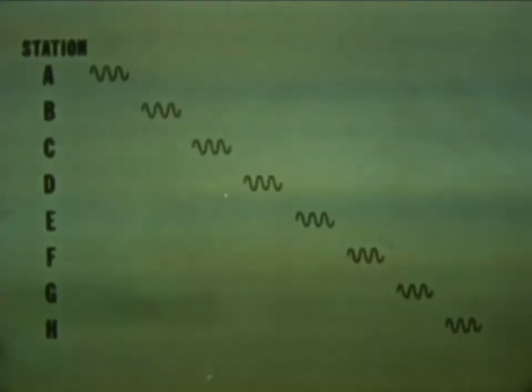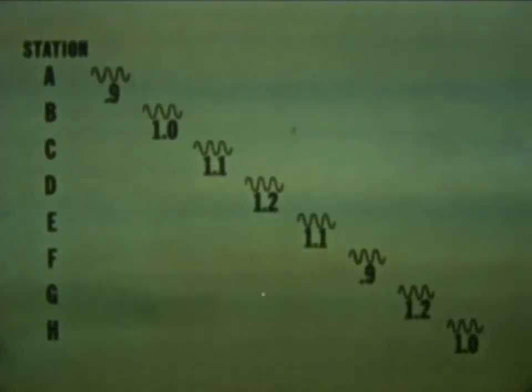Actually, there's a very slight difference in the duration of each station's transmission. For example, station A transmits 10.2 kilohertz for nine-tenths of a second, station B for 1.0 seconds, station C for 1.1 seconds, station D for 1.2 seconds. The same transmission periods are repeated for the other four stations and simply rearranged in order.